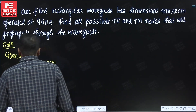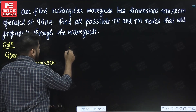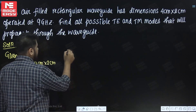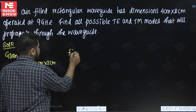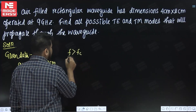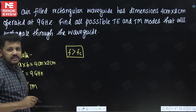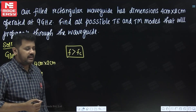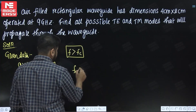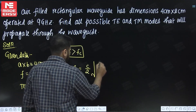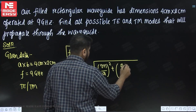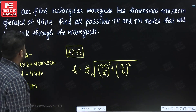So for this, we know that if the frequency is greater than the cutoff frequency, then only the wave will propagate. So for propagation, the frequency should be greater than cutoff frequency in a waveguide. That means we have to find the cutoff frequency. The cutoff frequency FC is equal to C upon 2 times root under (M upon A) squared plus (N upon B) squared.